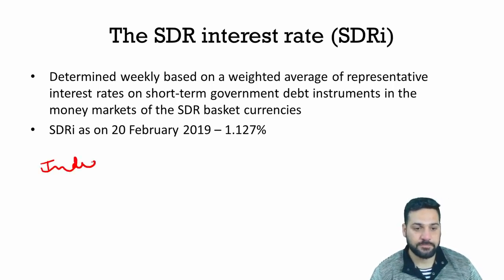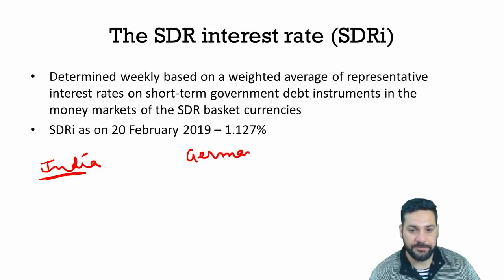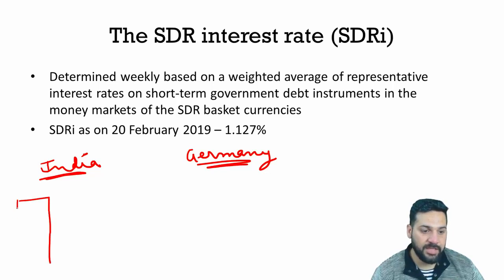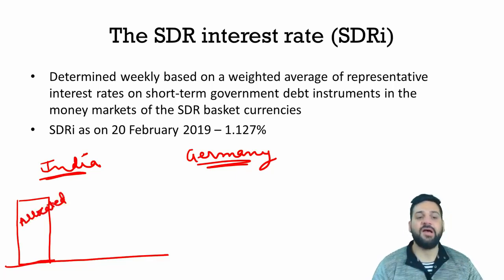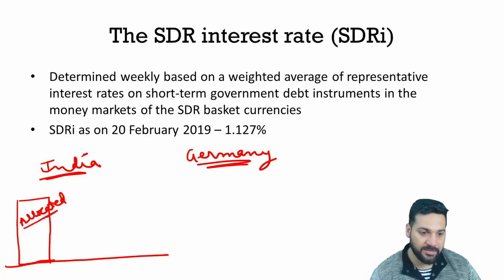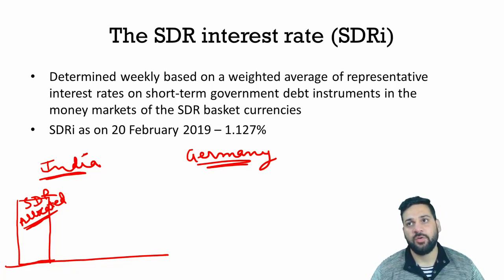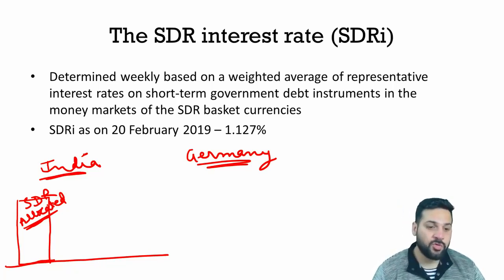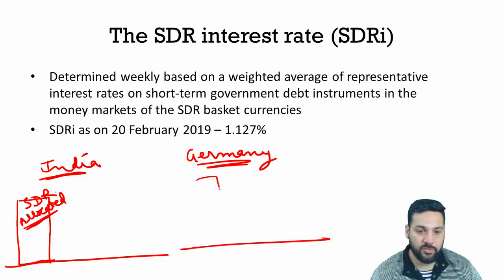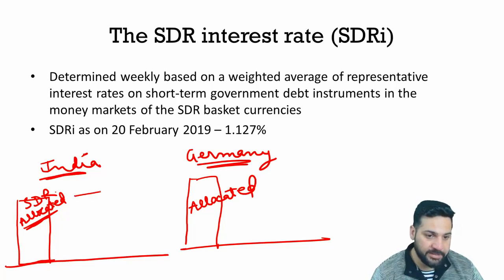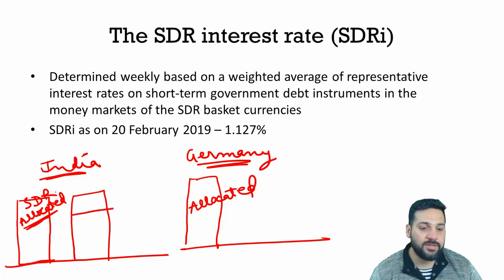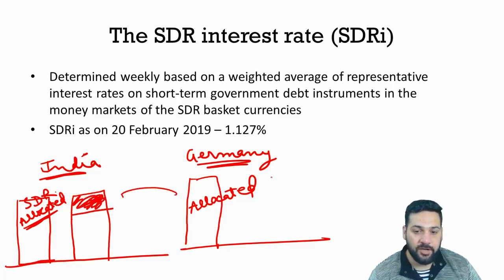For example, suppose India and Germany are both IMF member countries. The IMF allocated SDRs to India, but India needed money to pay for debts or a trade deficit. So India sold some of its SDRs to Germany. Germany now holds more SDRs than its allocation, while India holds fewer.